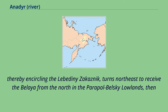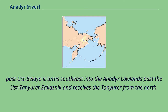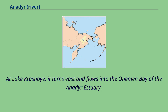Thereby encircling the Lebedini Zakaznik, it turns northeast to receive the Belaya from the north in the lowlands, then past Ust-Belaya it turns southeast into the Anadyr lowlands, past the Ust-Tanyurer Zakaznik and receives the Tanyurer from the north. At Lake Krasnoye, it turns east and flows into the One-Man Bay of the Anadyr estuary.